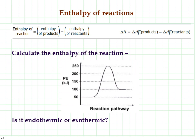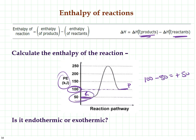Let's calculate the enthalpy of reaction using a potential energy diagram. Potential energy is on the y-axis. Delta H equals products minus reactants. If products are at 100 kilojoules and reactants are at 50 kilojoules, then delta H equals 100 minus 50 equals positive 50 kilojoules. This makes sense because we had to add 50 kilojoules of energy from the surroundings — the reactants only had 50 and the products needed 100. Because delta H is positive, this is an endothermic reaction.